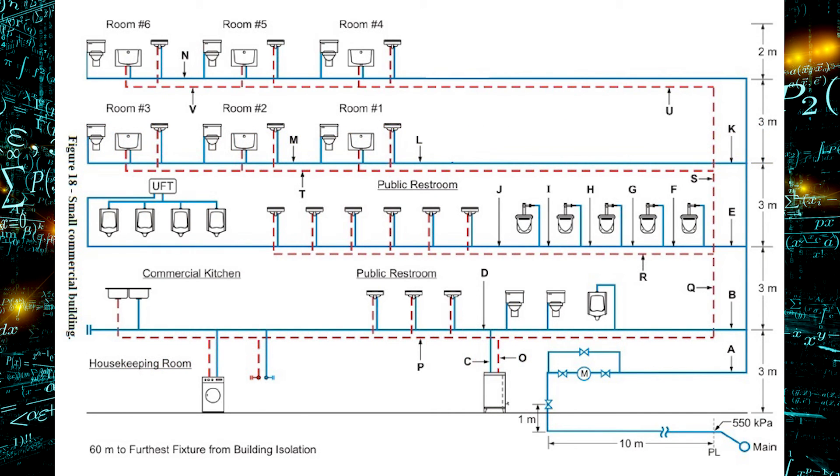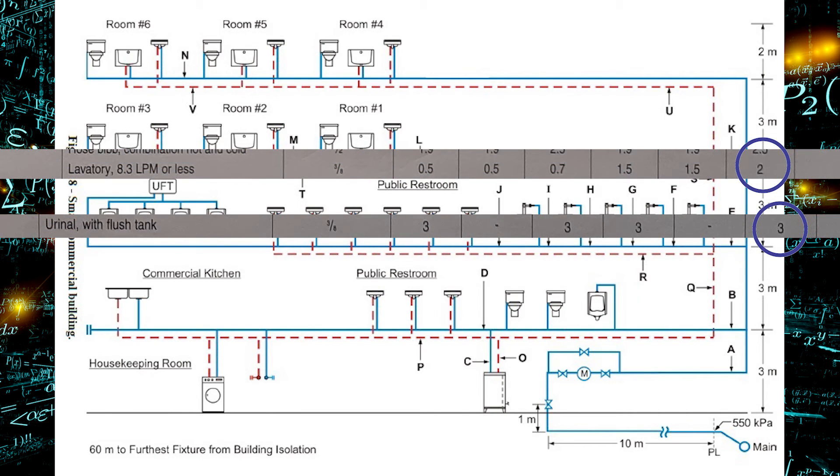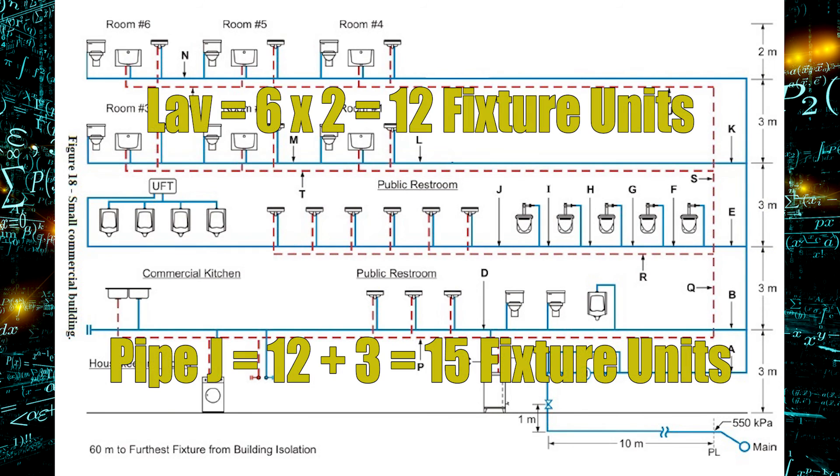On the second floor, let's look at pipe J. That's a cold water line, and that's providing water to six lavs and one urinal flush tank. That's what that is on the left-hand side. The urinal flush tank is three fixture units, and the lavs are two fixture units each. So six times two is 12 fixture units, plus the three. Pipe J needs to supply 15 fixture units.